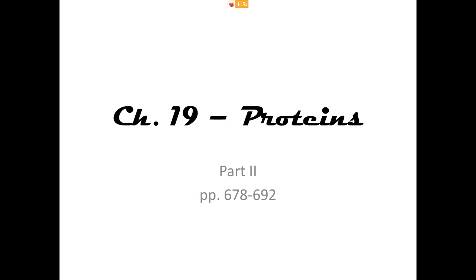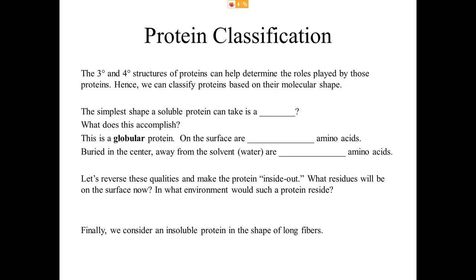We're going to continue our discussion of proteins, and today we're going to change direction a bit. Not so much what a protein is made of — we did that last time — but what ways can we put proteins together. It's not a math problem about combinations of amino acids; it's how many ways can they fold on themselves. We're talking mostly about the tertiary and quaternary structures of proteins — the overall shape — which can adopt many different shapes.